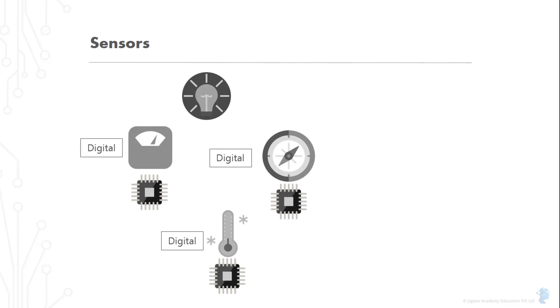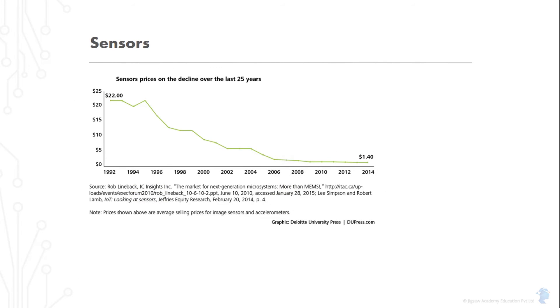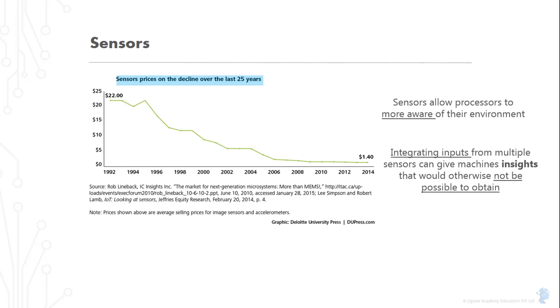This is actually a much broader trend. Think of the typical list of sensors in a smartphone. The three-axis gyroscope, the accelerometer, GPS, light and proximity sensors. And this is just the tip of the iceberg. There are many, many more for all sorts of specialized purposes. And they have steadily been getting cheaper. These sensors allow processors to become much more aware of their environment. That is, instantly know what is happening around them. Integrating the inputs from multiple such sensors can give machines insights that would otherwise not be possible to obtain.